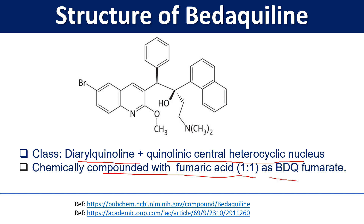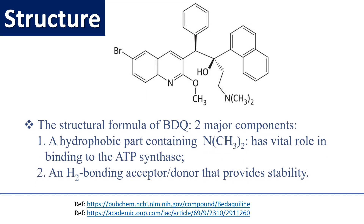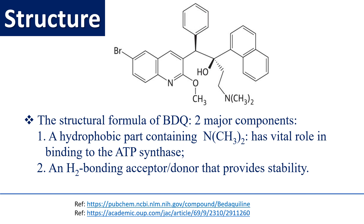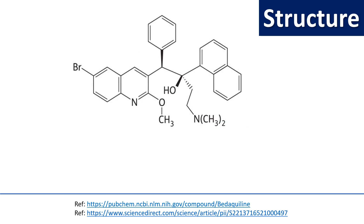The structural formula of Bedaquiline has two major components. The first is a hydrophobic part containing CH and CHT groups, which has a vital role in binding to the enzyme ATP synthase. The second component is an H-bond acceptor/donor that provides stability to the molecule.